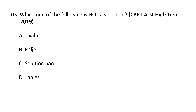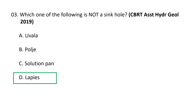Next question: which one of the following is not a sinkhole? a) uvala, b) polje, c) solution pan, d) lapiés. The correct answer is d) lapiés. When water flows over a limestone surface, lapiés are formed — limestone develops several narrow, deep trench-like structures and clints and grikes, dispersed by sharp, pin-like vertical pinnacles roughly parallel to each other. Lapiés is not a sinkhole, so d is the correct option.